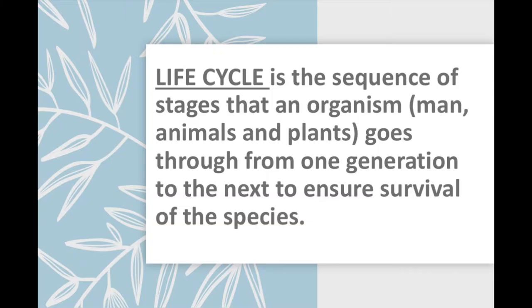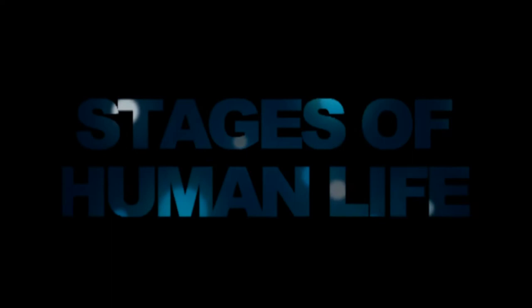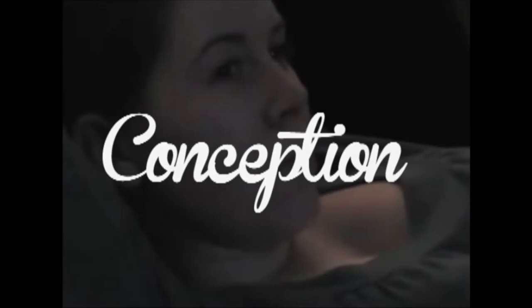A life cycle is the sequence of stages an organism such as man, animals, and plants go through from one generation to the next.